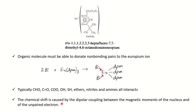How does this impact the chemical shift? The chemical shift is shifted by the dipolar coupling between the magnetic moment of the nucleus and the unpaired electrons. Because of this dipolar interaction, the chemical shift is shifted to the higher frequency region.